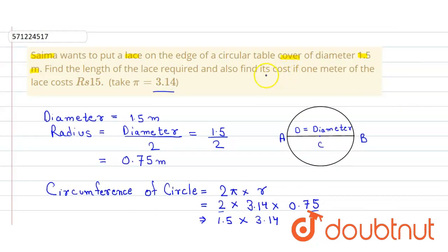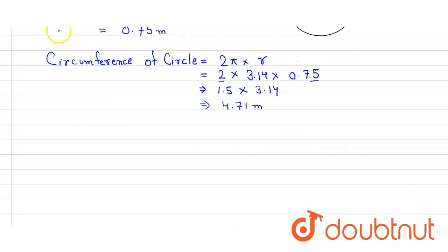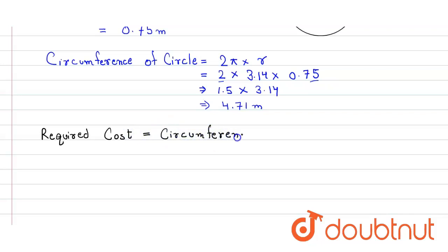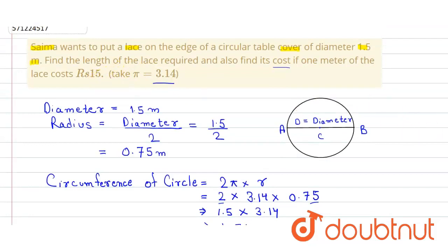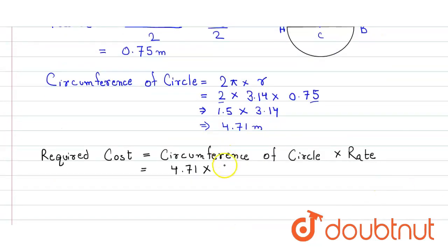That's the answer to the first part. In the second part, we find the cost when 1 meter of lace costs rupees 15. The required cost equals the circumference of the circle multiplied by the rate. So it is 4.71 meters into rupees 15, which equals rupees 70.65. That's our answer.